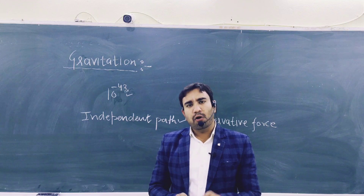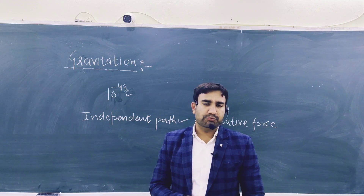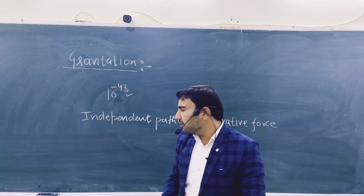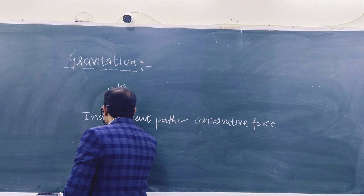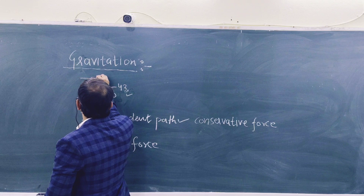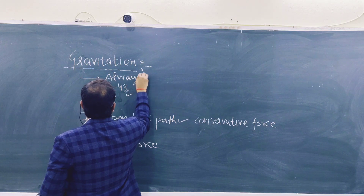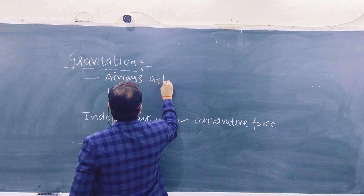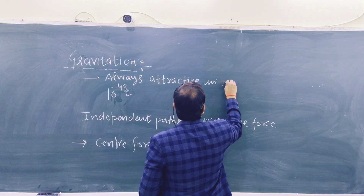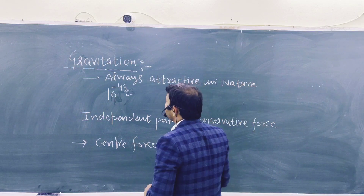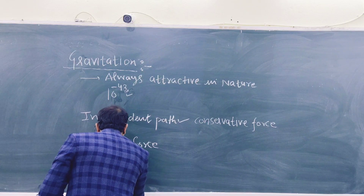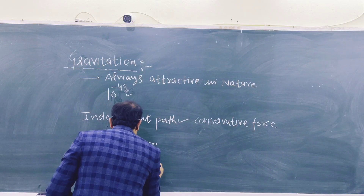Next point: gravitational force is actually a central force, and it always lies towards the center of the body. Whatever the system is, it will always act toward the center. Gravitational force is also always attractive in nature and is the weakest force among all the forces.